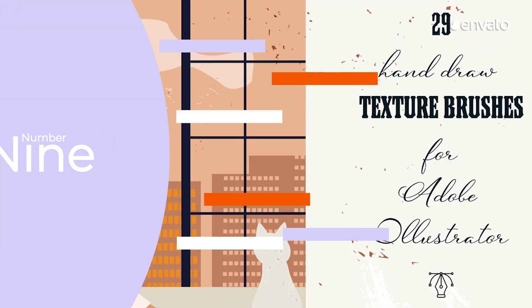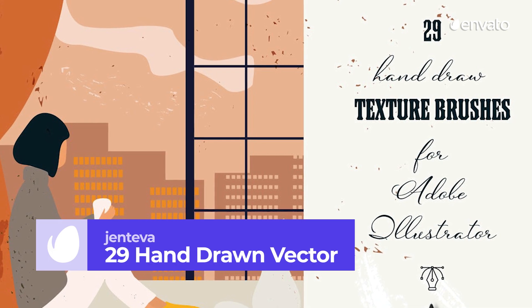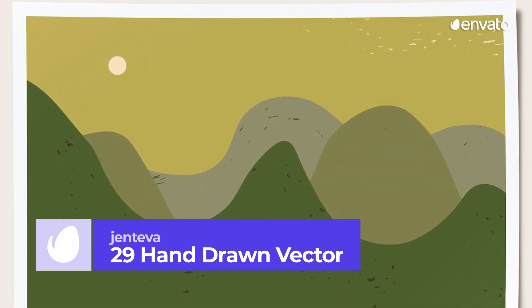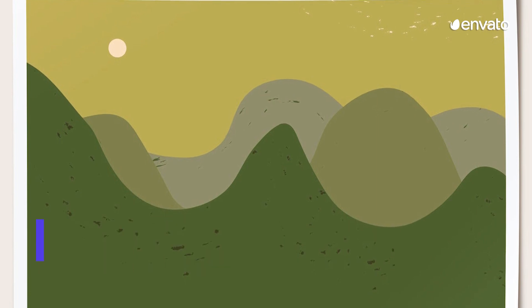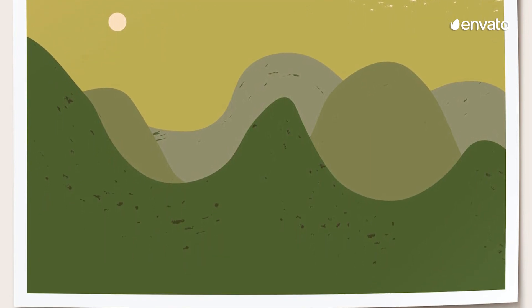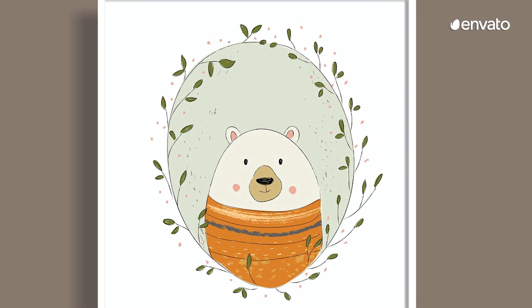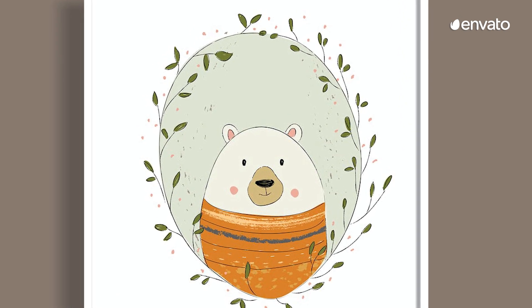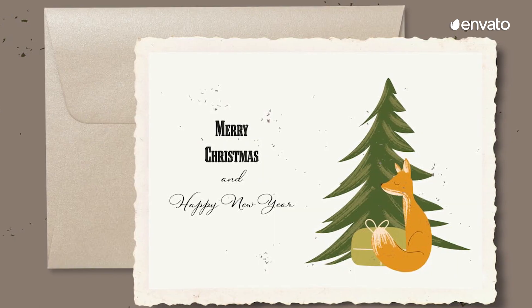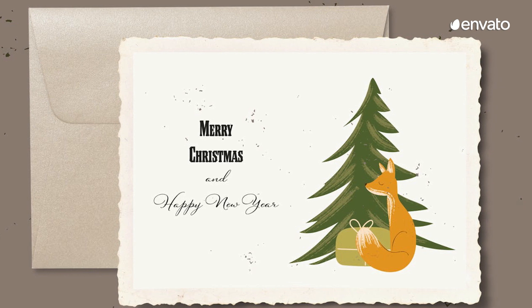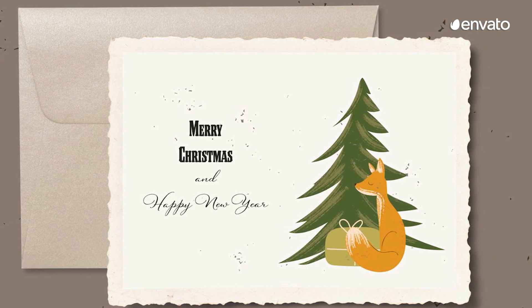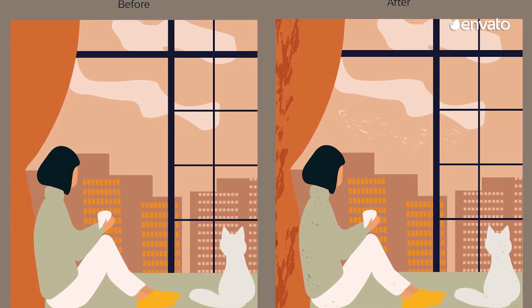Number 9. Give it that handcrafted feel with these Vector Grain Textures by Gentiva. With 29 grain and texture brushes built for Adobe Illustrator, add a subtle depth to your illustrations. With varying degrees of shading density, texture, and grunginess, these brushes are perfect for shading. With strategically messy vector patterns, each brush looks bespoke, adding a sense of grunginess, and they're all compatible with Adobe Illustrator CC17 and above.